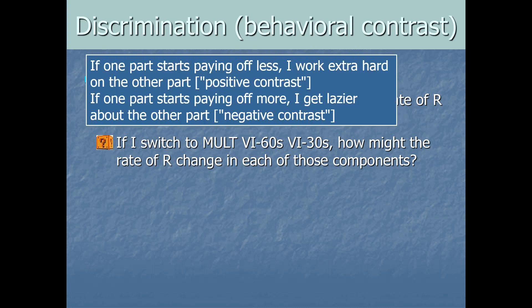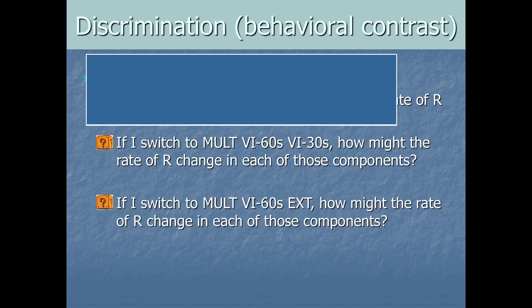So here's a reminder from the last slide. In this case, one part started paying off more, so I got lazier on the other part. This would be negative contrast. All right. Now, imagine instead that starting from a VI-60, VI-60, I switch to a VI-60 and extinction, right? How might the rate of behavior change in each of those components, going from a VI-60, VI-60 to this new schedule at the bottom here? Pause and make a prediction.